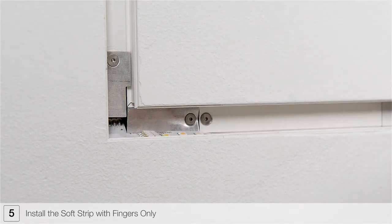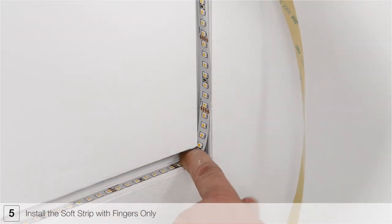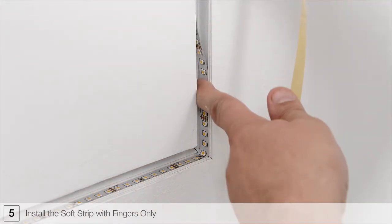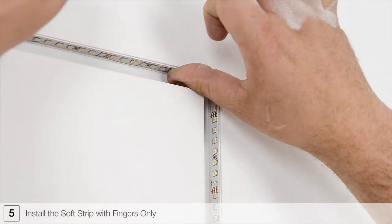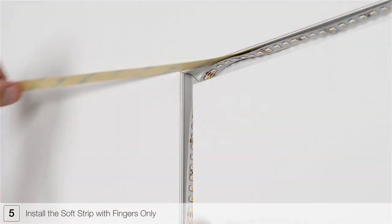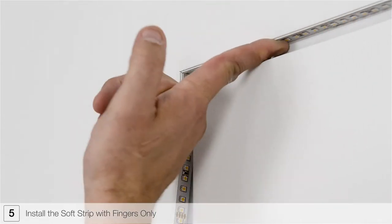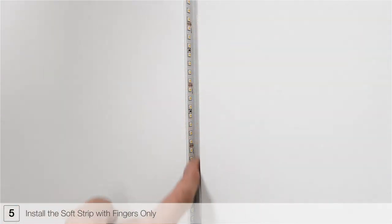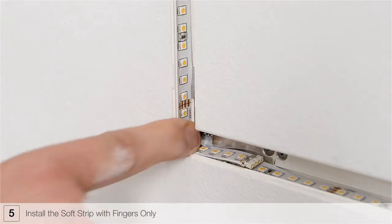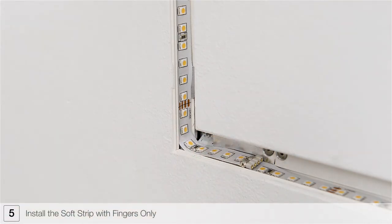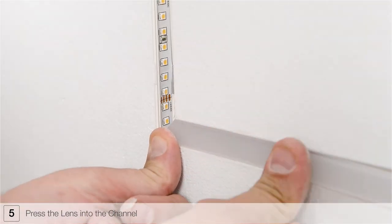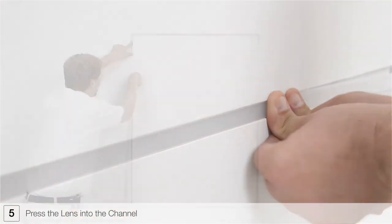Gently press the adhesive backing of the soft strip into the outside edge of the channel while continuing to remove the paper backing. Continue installing the soft strip wrapping around corners. Ensure LED strip overlaps the flexible power connector to avoid dark spots. Press the lens into the channel making sure that it is fully seated.